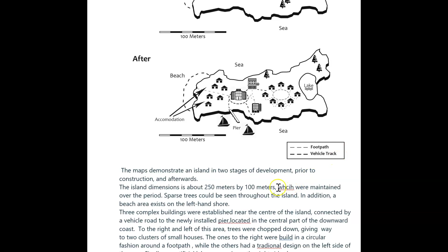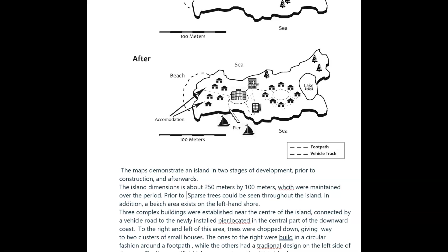Which spelling was maintained? Sparse trees could be seen throughout the island. In addition, the beach area exists on the left-hand shore. I would say 'prior to development' — prior is like before. Sparse trees — good word. What they represent is a wood, so one tree represents a wood. But don't worry, you'll have to know that.